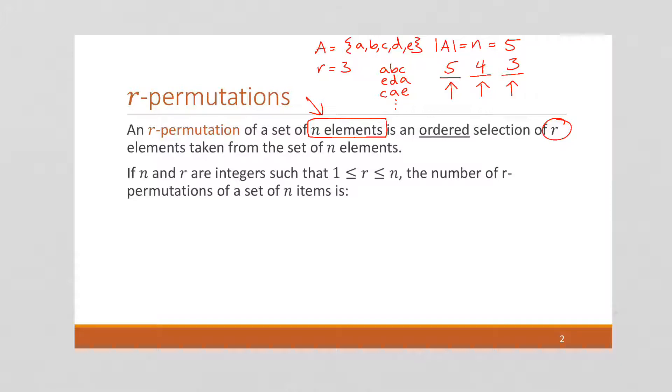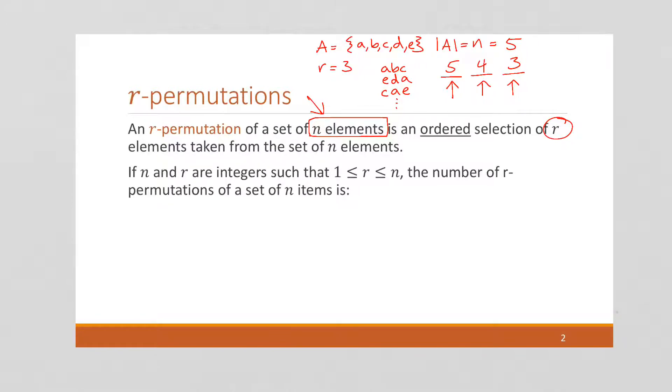So this is going to be, to order a permutation of 5 elements where we pick 3 is going to equal 5 times 4 times 3, which is going to be 60.